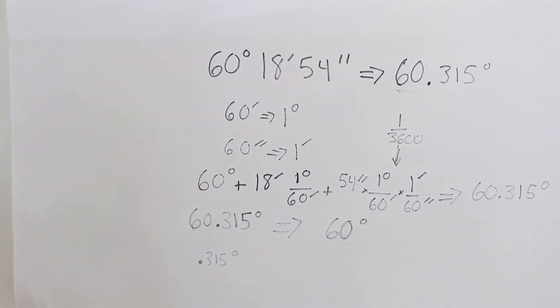So to convert that into minutes, we're going to multiply by 60, 60 minutes in one degree. And that's going to give us 18.9 minutes.